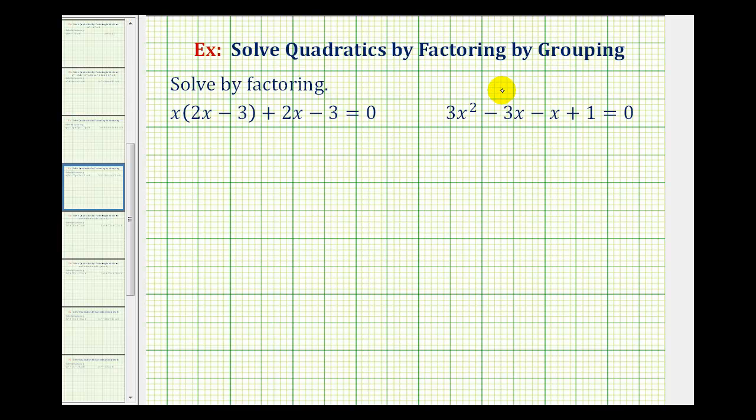Normally when using this method, we divide the polynomial in half and then factor out the greatest common factor of the terms on the left and then again for the terms on the right. But in this example, notice how the left side is already in factored form. We have x times the quantity 2x minus 3, and now using the grouping technique, our goal is to have another binomial factor of 2x minus 3 on the right.